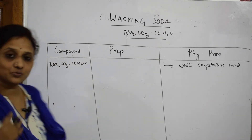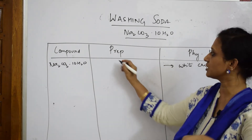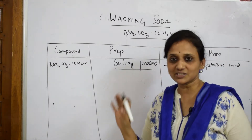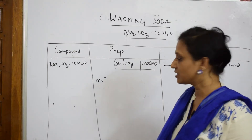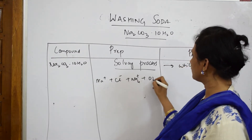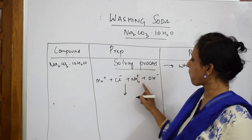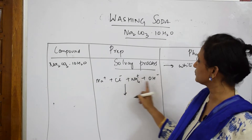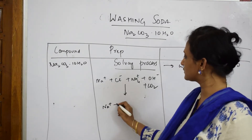The preparation of sodium carbonate (washing soda) uses the Solvay process. In the Solvay process, writing the ionic reaction: Na⁺ combines with Cl⁻, along with ammonium (NH₄⁺) and hydroxyl ions. In step one, we also have CO₂ involved, producing HCO₃⁻ and NH₄Cl (ammonium chloride).